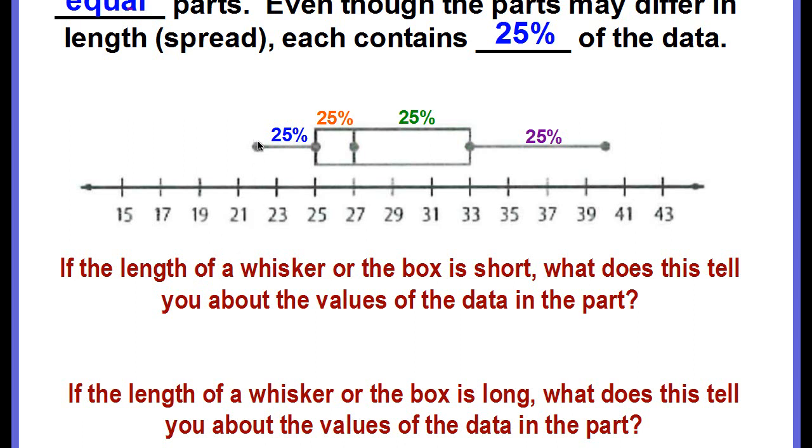Look at this box plot. From the minimum to Q1, this represents 25% of our data. From Q1 to Q2, which is the median, represents 25% of the data. From Q2 to Q3 is another 25% of the data, and from Q3 to the maximum represents 25% as well.